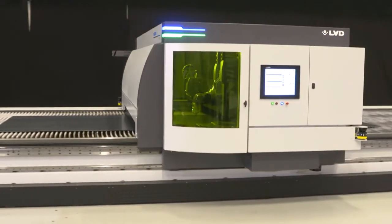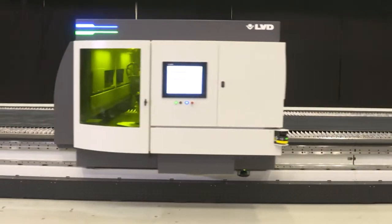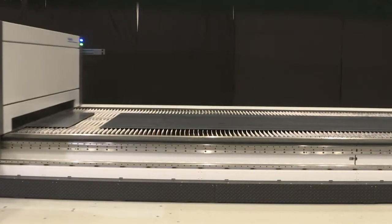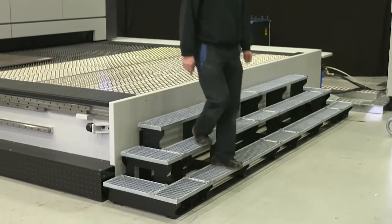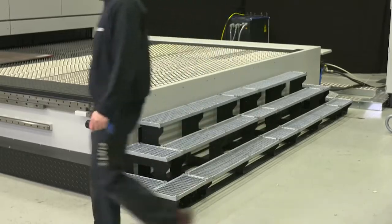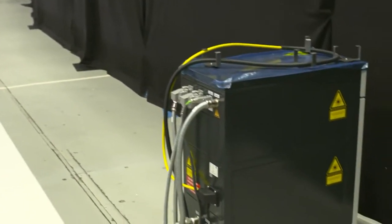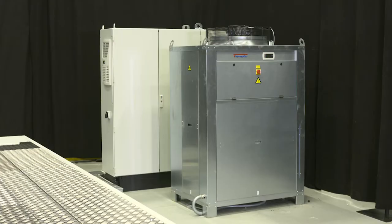Rigid stairs over the full machine width allow safe access to the cutting table. Next to the machine you find the IPG fiber laser, the electrical cabinet, and the chiller.